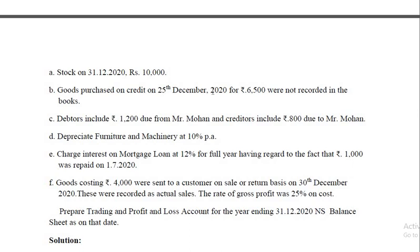Goods purchased on credit on 25th December 2020 for 6,000 were not recorded in the books. Books were purchased but they forgot to make an entry. So it is a credit purchase. Therefore, the entry should be purchases account debit, sundry creditors credit. So 6,500 should be added to purchase account and 6,500 should be added to sundry creditors on the liability side of the balance sheet.